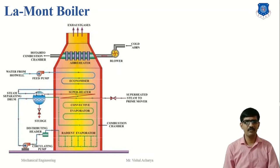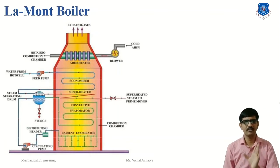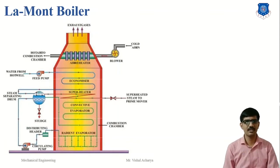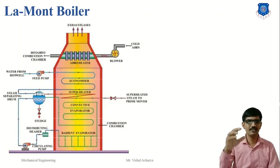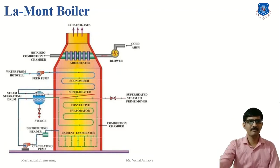The convective evaporator changes the mixture of steam and water into saturated steam, converting wet steam into saturated steam through the convective mode of heat transfer. The superheater then raises the steam to the desired temperature for impacting the turbine blades.